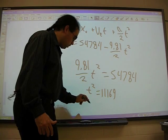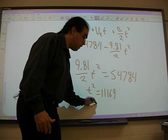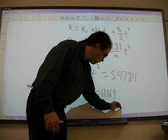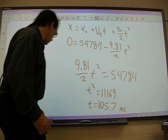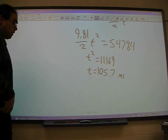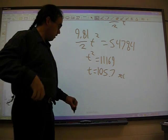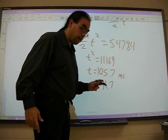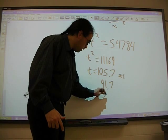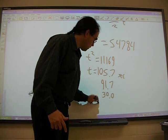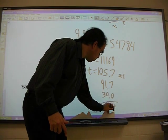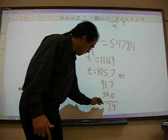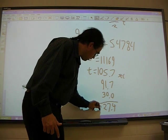So we have 9.81 over 2 t squared equals 54,784. Multiply both sides by 2 and then divide by 9.81. We get t squared equals 11,169. Square root of both sides here, you get t is equal to 105.7 seconds.